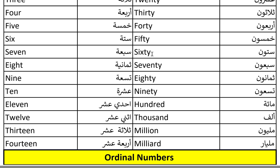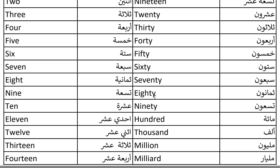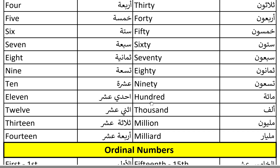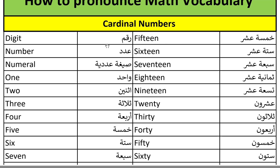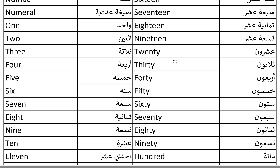The same idea applies to 14/40, 15/50, 16/60, 17/70, 18/80, 19/90, and so on. So the key difference with these number pairs is the stress placement — stress on 'teen' for the teens, and stress on the first syllable for the tens — so that students don't confuse them. That's how to pronounce the cardinal numbers. Now let's move on to ordinal numbers.